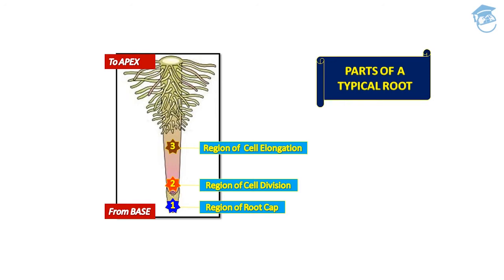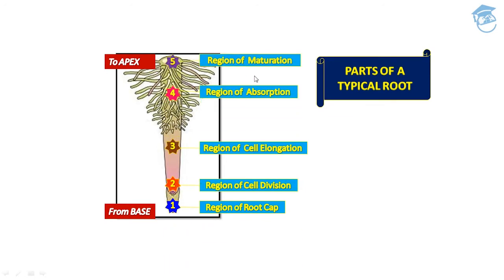This region is called the region of elongation. The cells of the elongation zone gradually differentiate and mature. Hence the zone proximal to the region of elongation is called the region of maturation. Because of the root hairs present, it is also called the region of absorption — here many minerals, water, and ions get absorbed because of the root hairs.